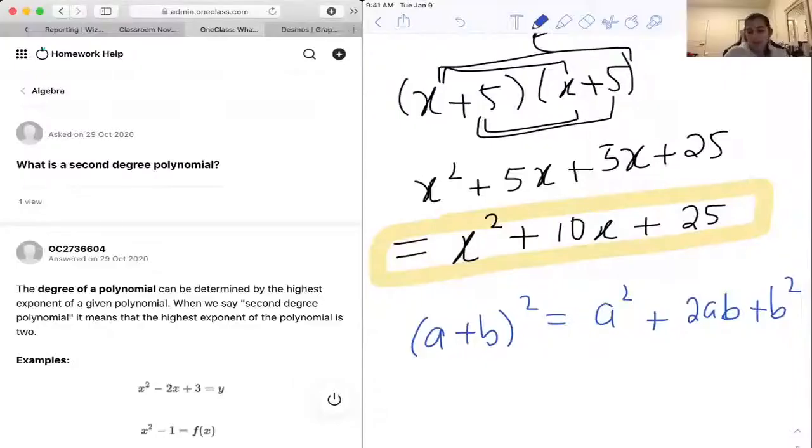Next question they ask us is, what is a second-degree polynomial? So the degree of a polynomial is like the highest exponent on any of the variables, or any of the things in the equation.